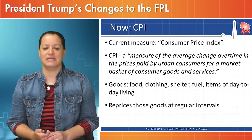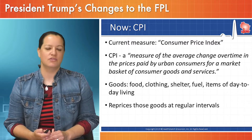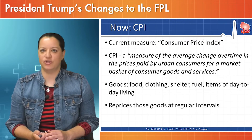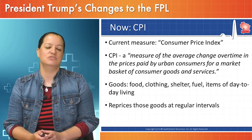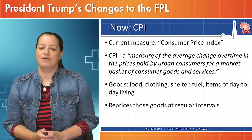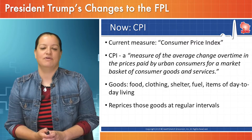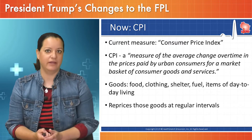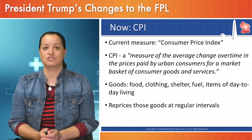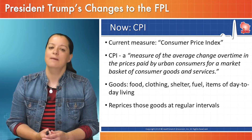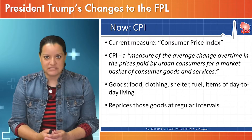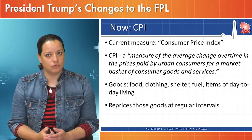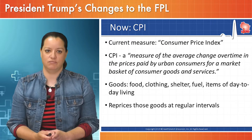Think of a market basket of goods as a combination of the cost of daily living — things like food, shelter, clothing, fuel, items you would need to survive. The federal poverty level sets its poverty line at 100% for eligibility for a lot of programs, which is actually still quite low. But it is adjusted every year based on the Consumer Price Index and tends to increase by a couple percentage points every year.